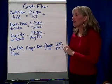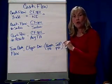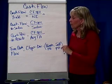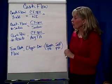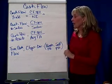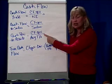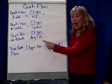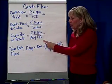Cash flow to sales is cash flow from operations over sales. We're also going to find cash flow to assets, which is cash flow from operations over average total assets.